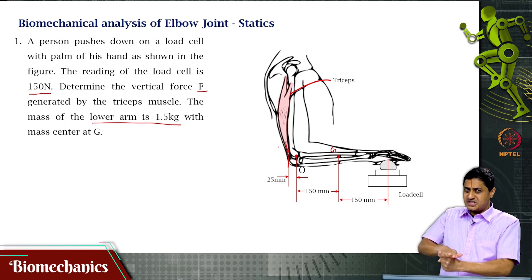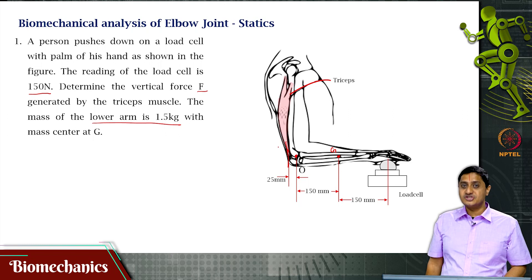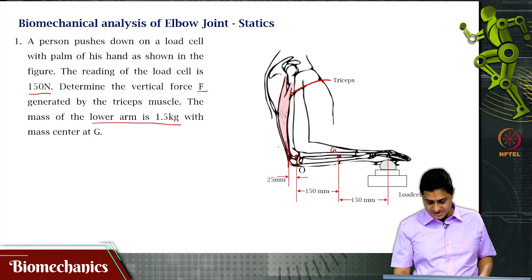Suppose this is the load cell. Let us assume my left hand is the load cell. And I am pushing on this. That action, if the load cell was not there stopping this, would lead to extension. That is performed by the triceps muscle.